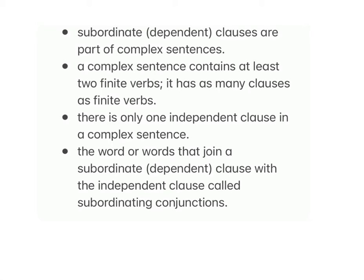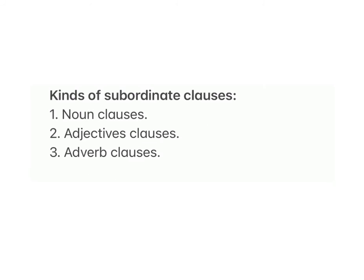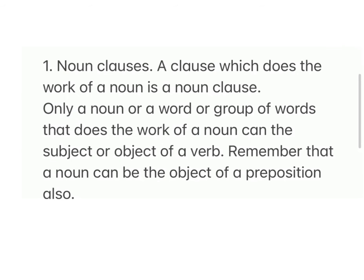The word or words that join a subordinate dependent clause with the independent clause are called subordinating conjunctions. Kinds of subordinate clauses: one, noun clauses; two, adjective clauses; three, adverb clauses.